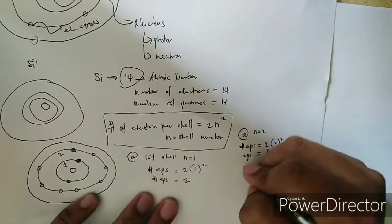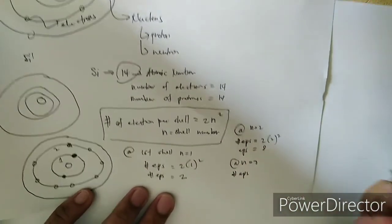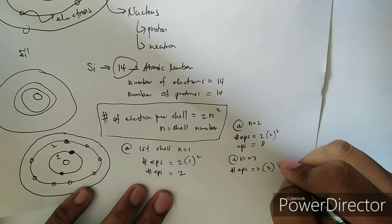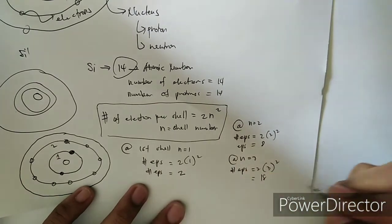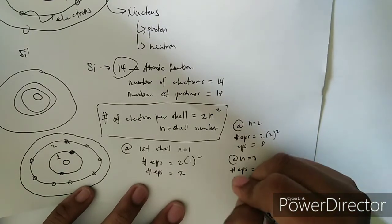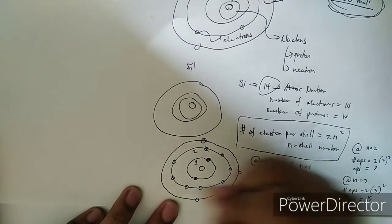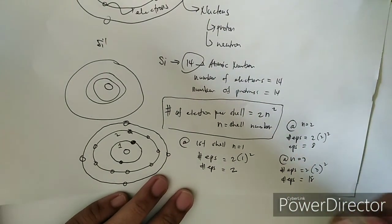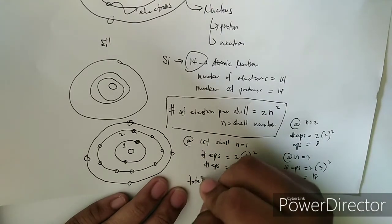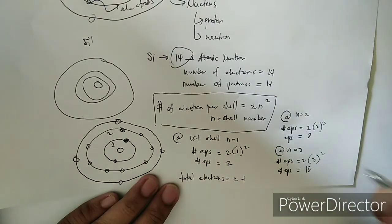For the third shell, where n equals 3, the electrons per shell equals 2 times 3 squared, which is 2 times 9, giving a maximum of 18. However, since we only need 4 more electrons to reach 14, we place just 4 in the third shell. So the electron distribution for silicon is: 2 in the first shell, 8 in the second shell, and 4 in the third shell.